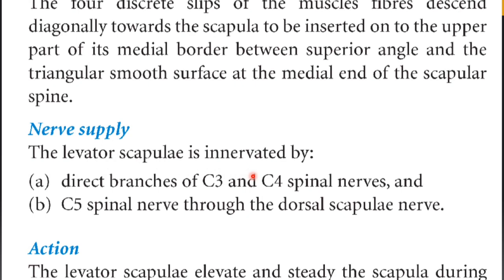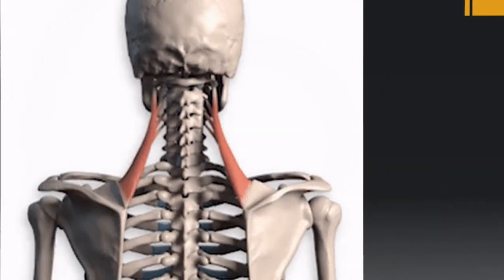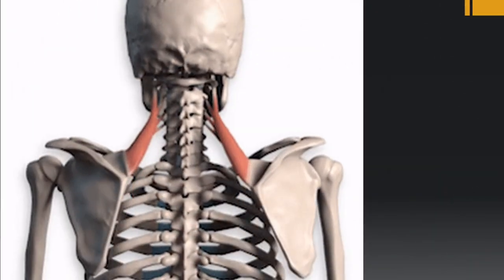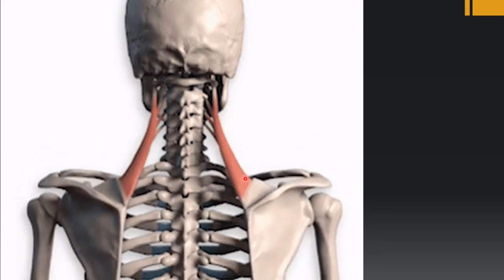The nerve supply of levator scapulae is by direct branches of C3 and C4 spinal nerves, and C5 via the dorsal scapular nerve. Its action is to elevate and steady the scapula during movements of the arm. Here you can identify the insertion of levator scapulae and see the movement of elevation of the scapula.